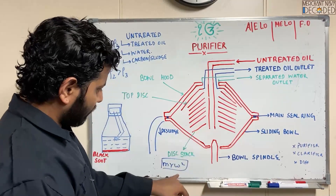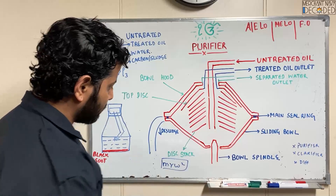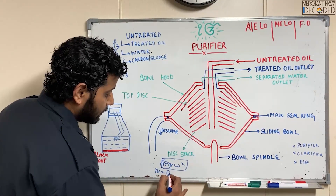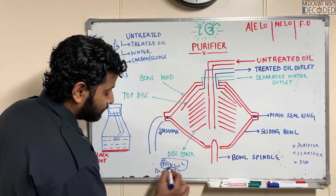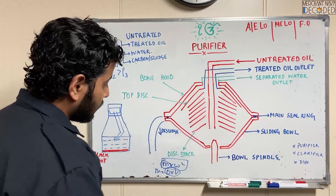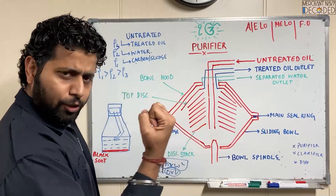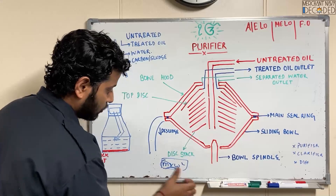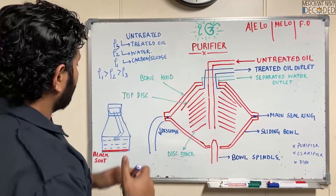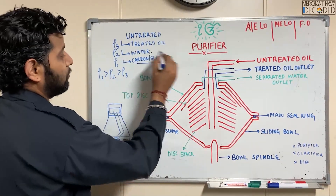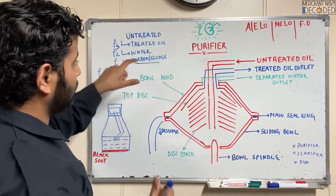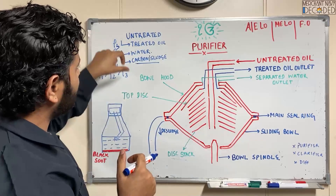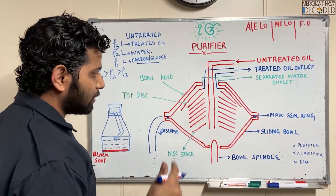R will be the same and Omega will be the same because it is the same RPM. Mass is the variable, and mass equals density into volume. Volume is the same for all particles, so density will be the deciding factor. The density of a carbon particle is going to be higher than the same-volume water molecule, and higher than the same-volume treated oil.